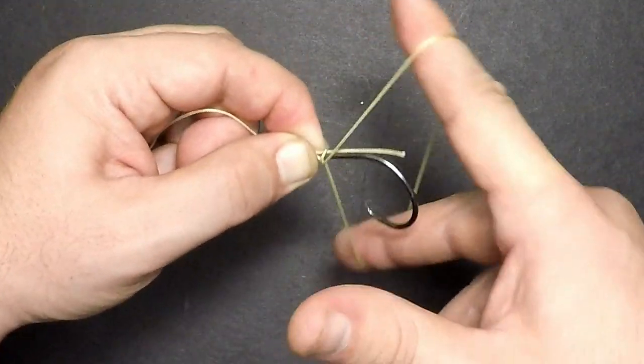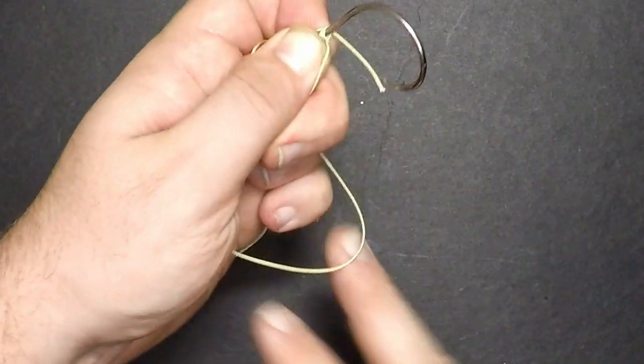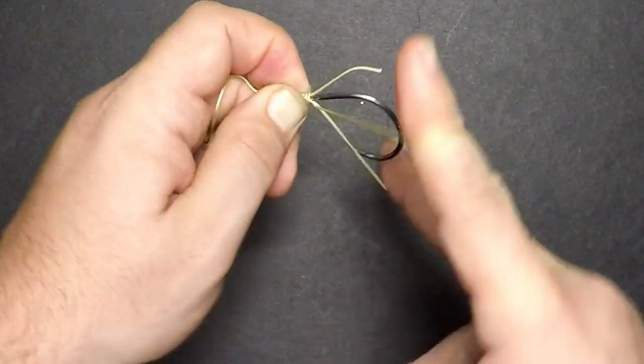Now begin making your wraps, keeping constant tension on the line. If the tag end moves on you, move it back into place so it can be tied down to the hook.